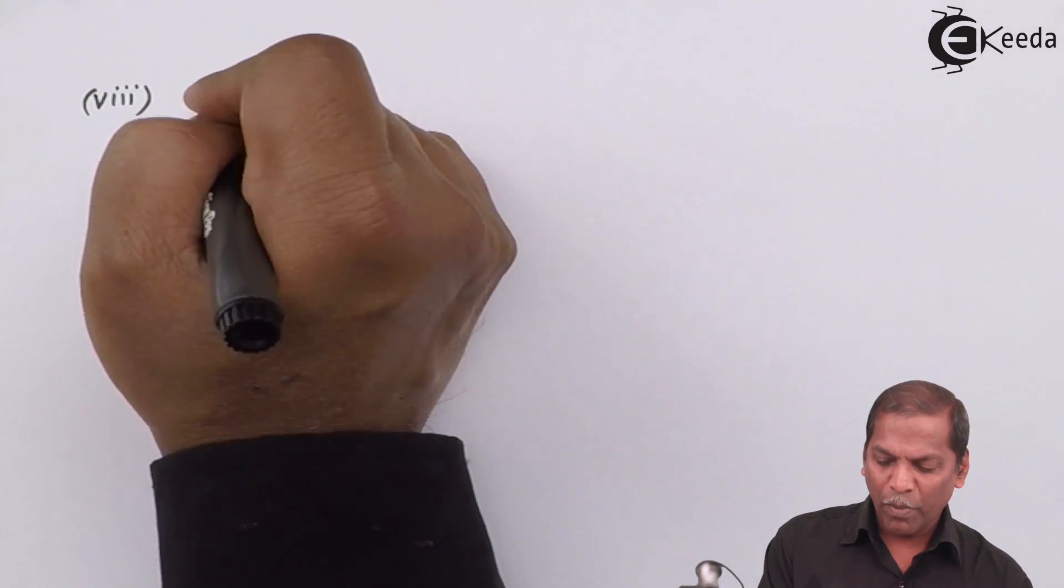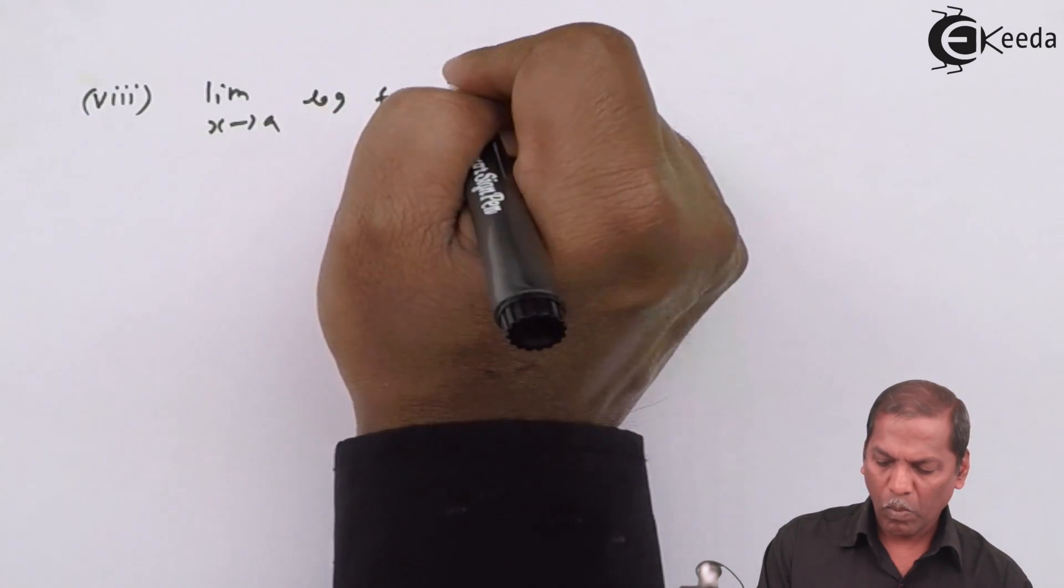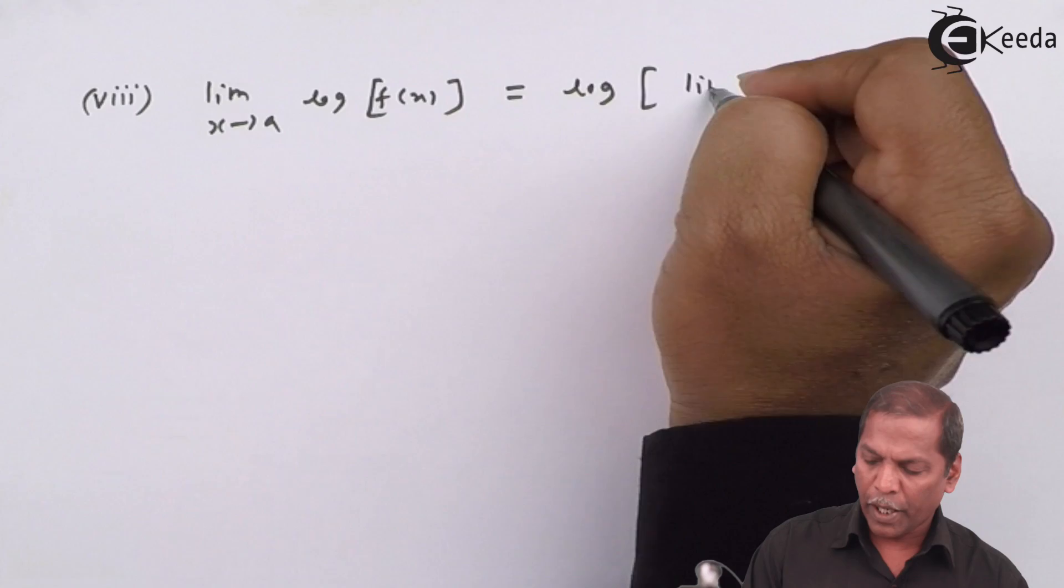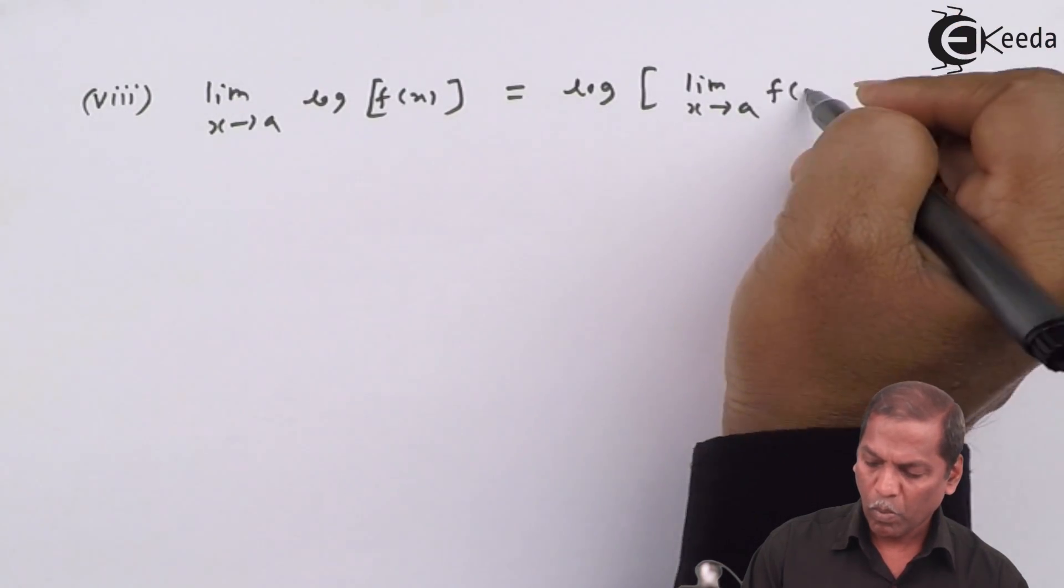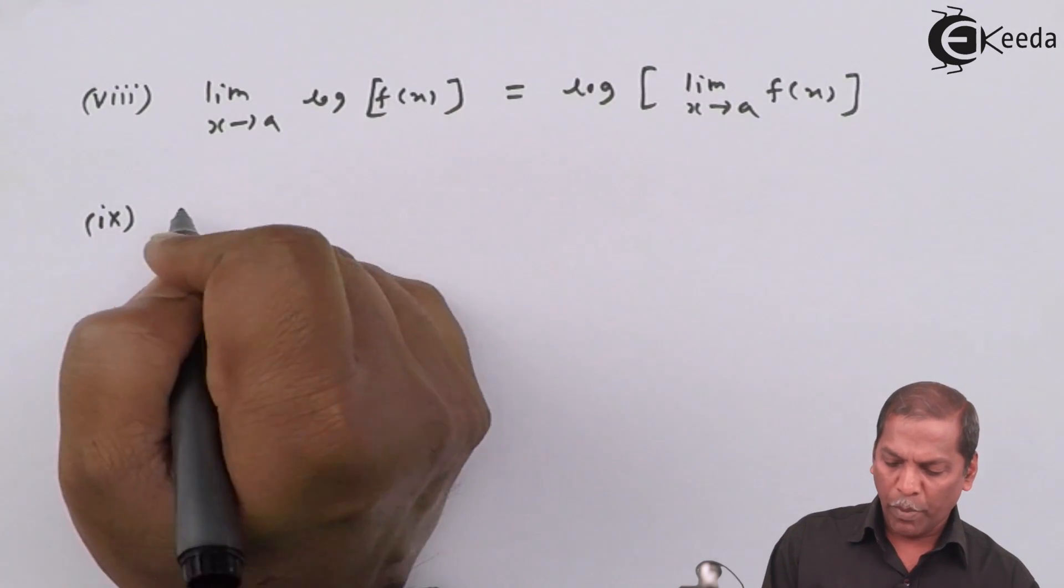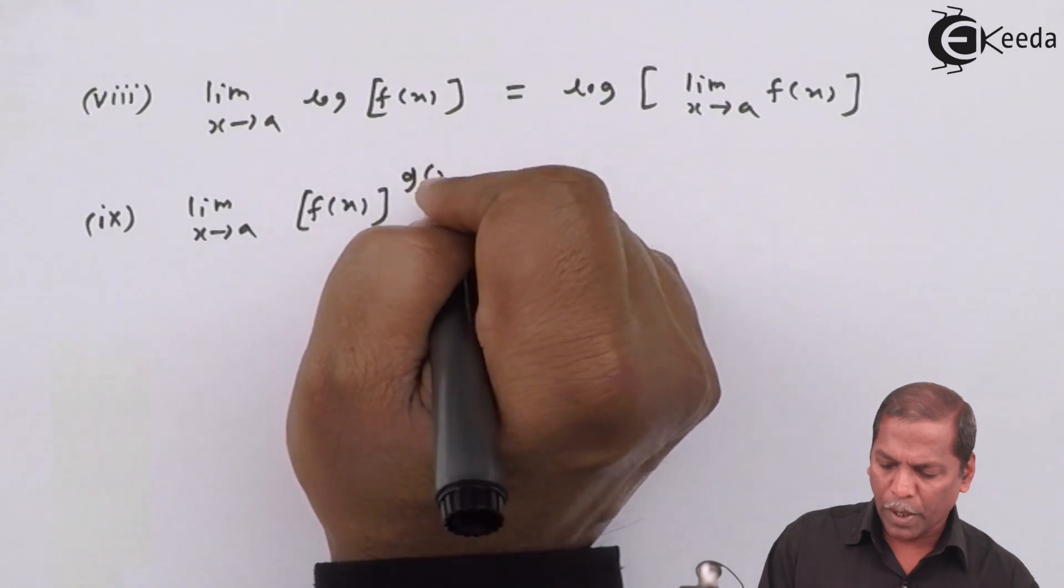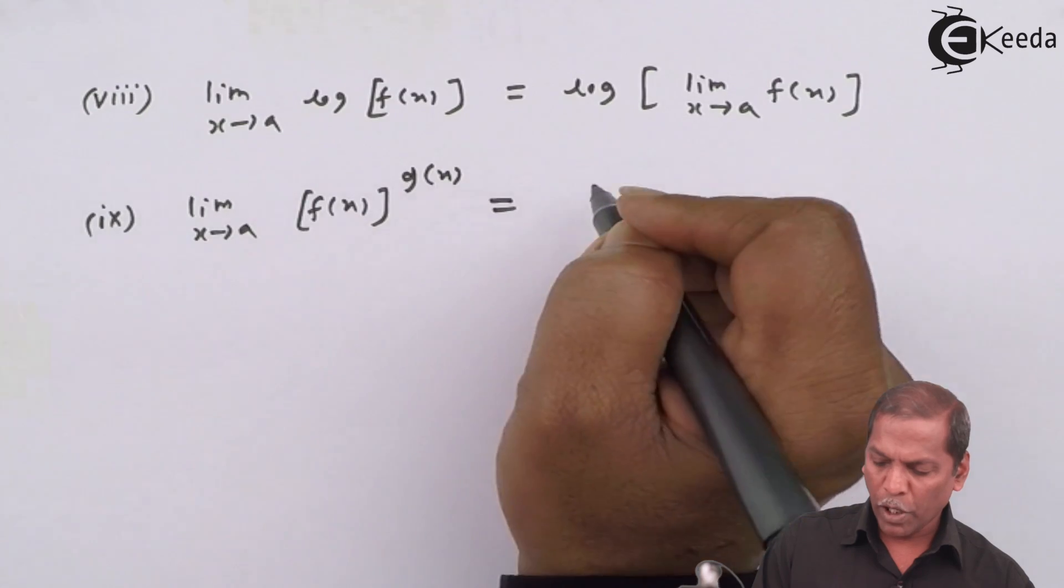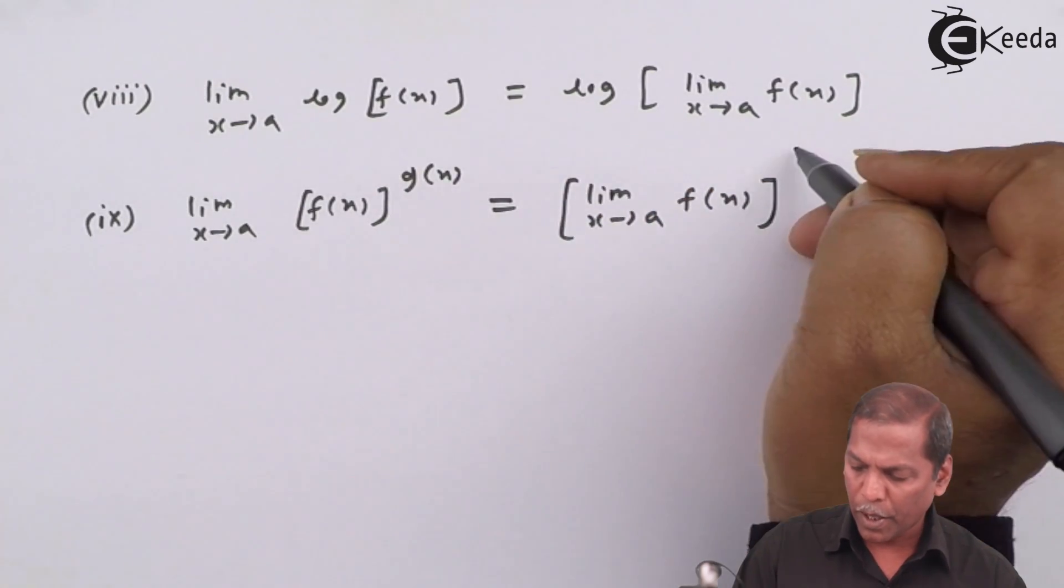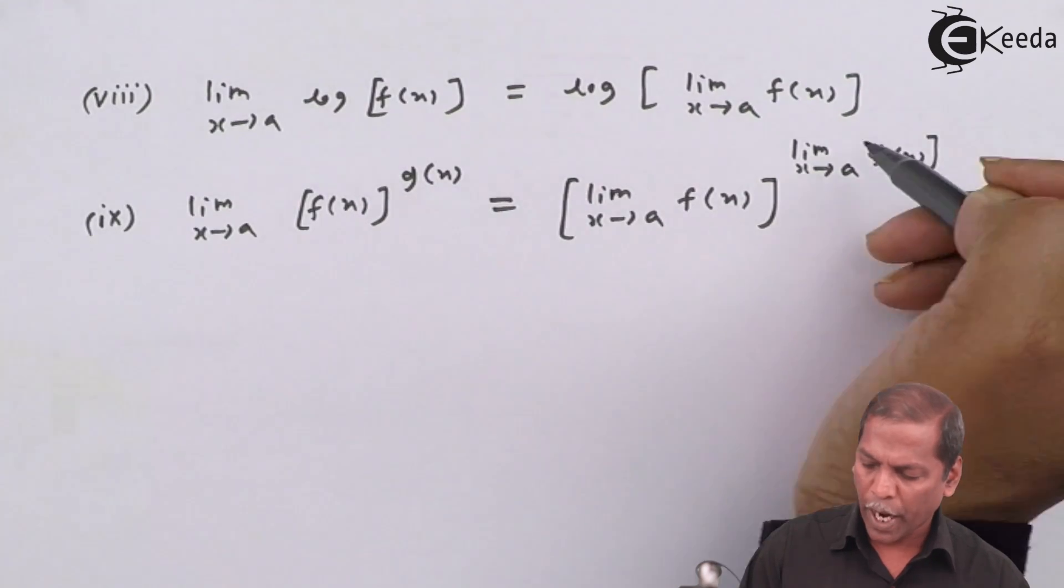Number 8: limit x tends to a f of x bracket complete raise limit x tends to a g of x bracket complete. These are the formulae of limits of algebra.